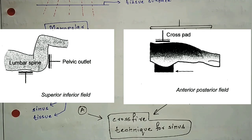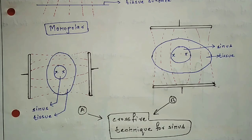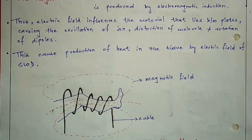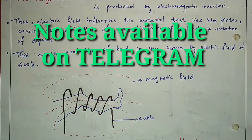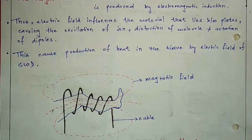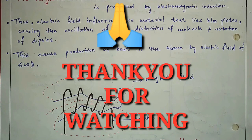The cross-fire technique is used for the treatment of the knee joint, sinus, or pelvic organs. That's all for this video. In the next video, we will talk about the cable method, then the physiological effects of heating the tissue, then indications, contraindications, and precautions. If you like my video, please like, share, and subscribe. Thank you for watching.